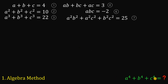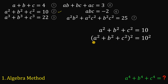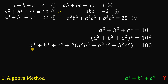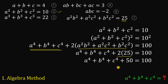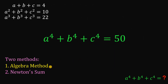That's all we need to find a to the fourth plus b to the fourth plus c to the fourth. Let's take equation two and square it. We get a to the fourth plus b to the fourth plus c to the fourth — what we need to find — plus the expression from equation seven, which equals 25. So this is just two times 25 equals 100, and we subtract 50 from both sides to get a to the fourth plus b to the fourth plus c to the fourth equals 50. Using the algebra method, this expression equals 50.